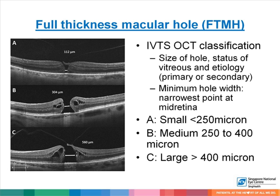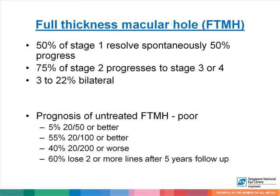We measure the minimum hole width, which is the narrowest point at mid-retina. In the smaller stage it is less than 250 microns, and a large hole is more than 400 microns. 50% of stage 1 holes resolve spontaneously and 50% progress. About three-quarters of stage 2 holes progress to stage 3 or 4.